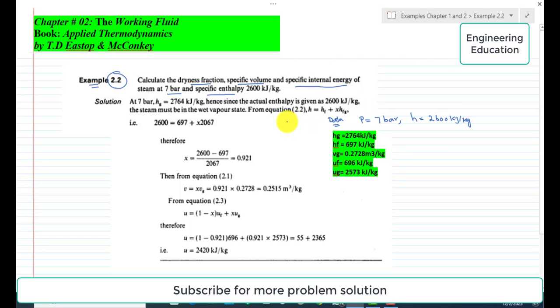At 7 bar, if we check the steam table for wet vapors, we have hg = 2764 kJ/kg, hf = 697 kJ/kg, specific volume at saturated vapor line vg = 0.2728 m³/kg, specific internal energy at saturated liquid line uf = 696 kJ/kg, and specific internal energy at saturated vapor line ug = 2573 kJ/kg.